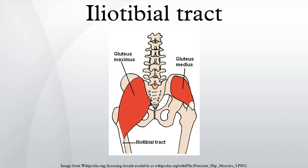During knee extension the ITB moves anterior, while knee flexion moves the ITB posterior. It originates at the antero-lateral iliac tubercle portion of the external lip of the iliac crest and inserts at the lateral condyle of the tibia at Gerdy's tubercle.